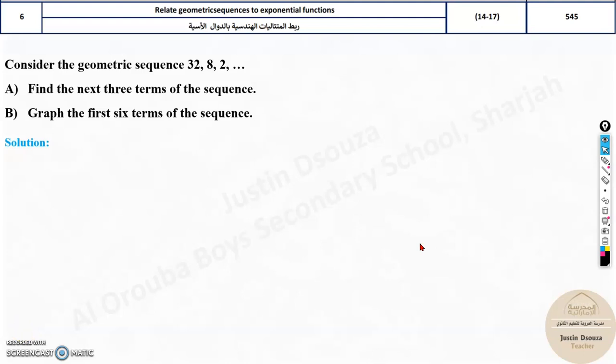The sixth topic is to relate geometric sequences to exponential functions. It might sound fancy, but what they want is basically to find a few terms of the geometric sequence and graph it. And when you graph, you realize the graph is an exponential function graph. Now we will see this.